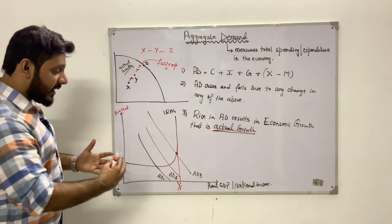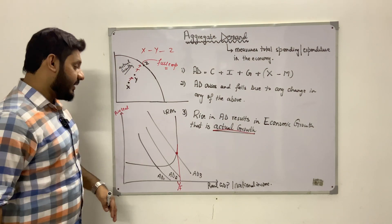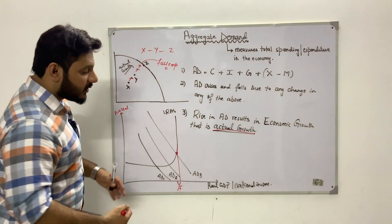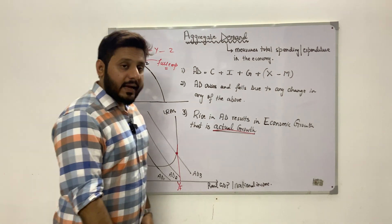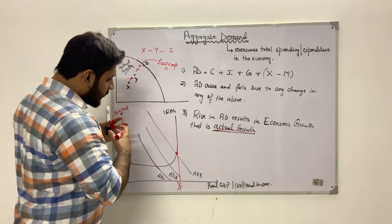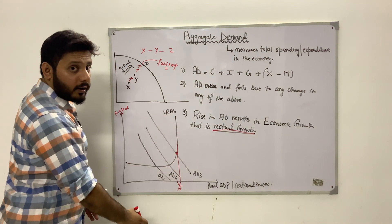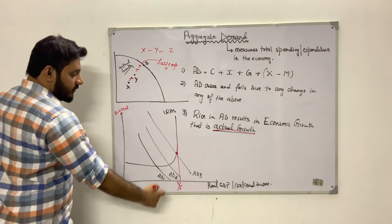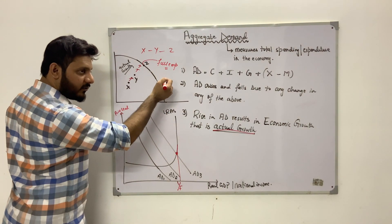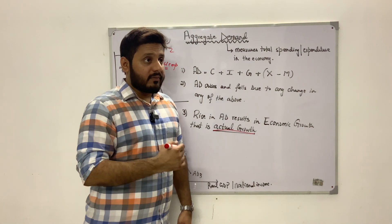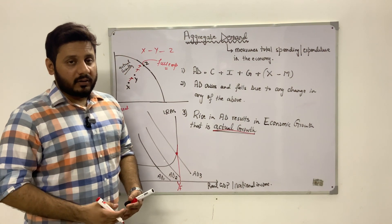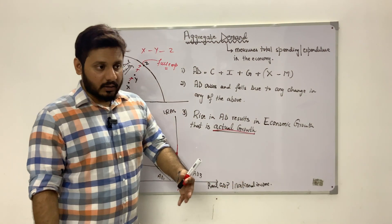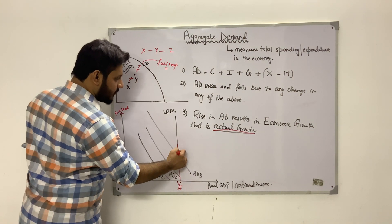We can show this on an aggregate demand and supply diagram. Here I've drawn a Keynesian aggregate supply curve — a Keynesian long-run aggregate supply curve. According to the Keynesian school of thought, the long-run aggregate supply is perfectly inelastic — a vertical straight line — representing that once resources have been fully employed, even if you keep increasing aggregate demand, there will be zero change in real GDP or national income, since all resources are fully employed.